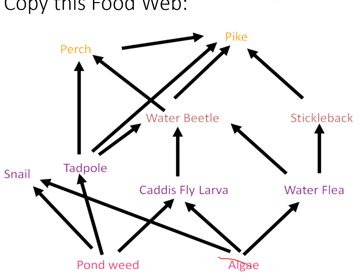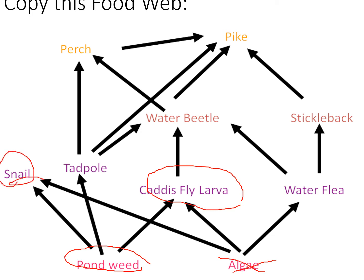The next question again related to what happens if algae goes extinct, but this time it was about what would happen to the pondweed. These are not directly linked; however, caddis fly larvae and snails also eat both algae and pondweed. So if there's no algae on the menu, the caddis fly and the snail are going to eat more pondweed, so pondweed numbers — the population — would decrease.